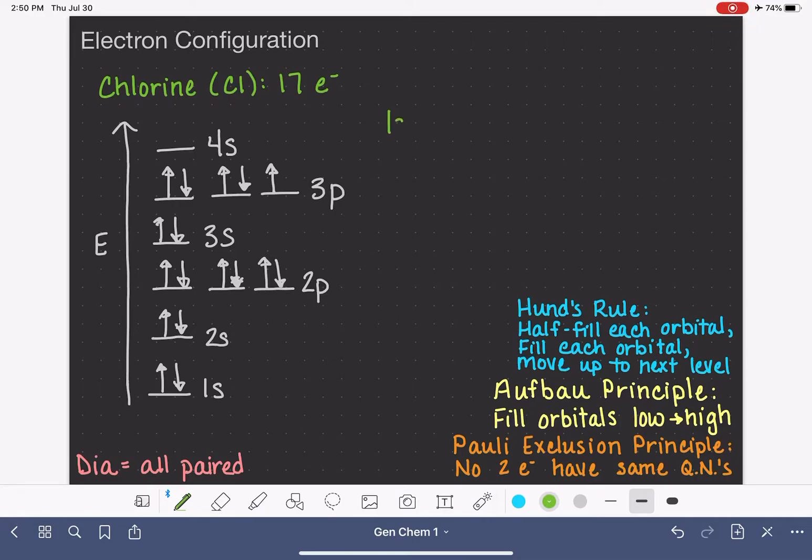We're just going to be reading off what we see in this energy diagram. We're writing the name of the orbital first and then the number of electrons that are in that orbital. For chlorine, it's going to be 1s² 2s² 2p⁶ 3s² and 3p⁵. So there's the electron configuration for chlorine.